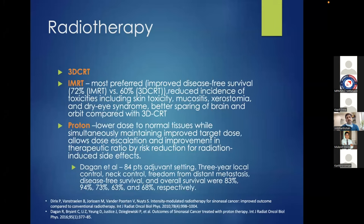Radiotherapy options include 3D-CRT, IMRT, or proton therapy. IMRT is generally preferred for its focused, planned delivery, sparing critical structures at the skull base—orbits, brain, cranium, carotids—better than 3D-CRT. Protons can deliver a larger dose to the tumor while better sparing normal structures and preventing complications, though availability of proton centers remains limited. IMRT remains the major mode of radiotherapy as of now.